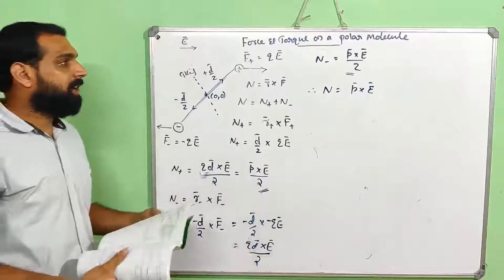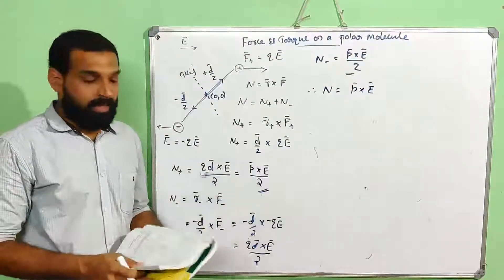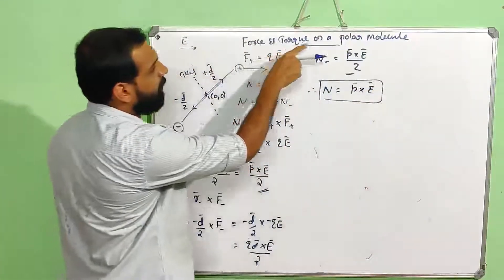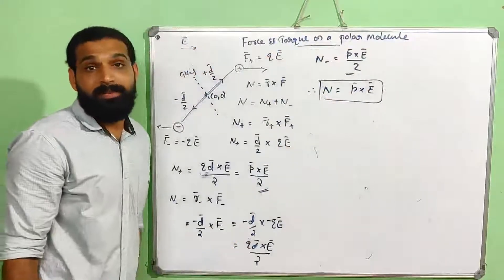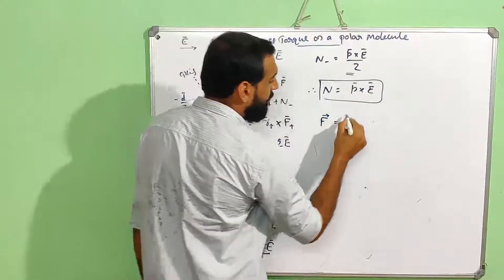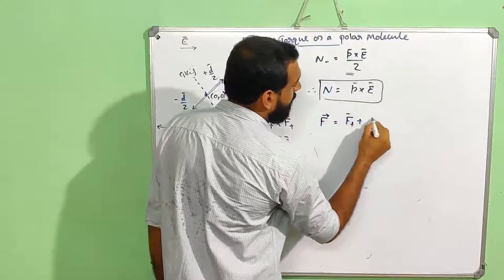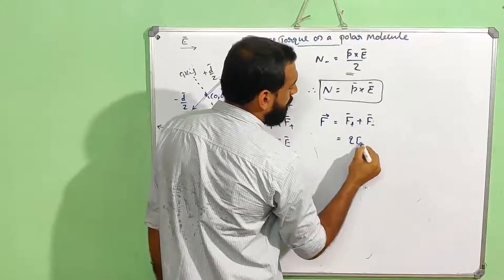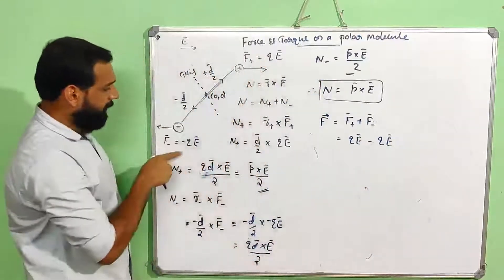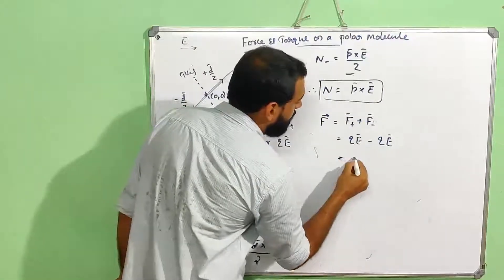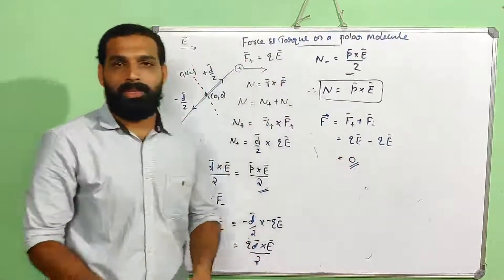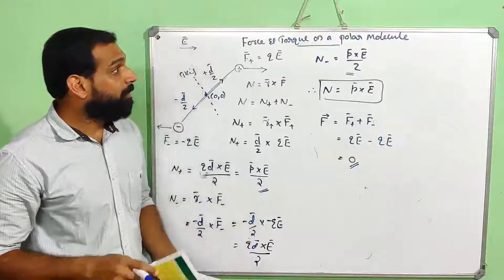Therefore, the net torque acting on the dipole is N plus plus N minus = p cross E / 2 + p cross E / 2 = p cross E. Now the total force: F plus plus F minus equals QE plus (minus QE), which equals zero. So the net force experienced by a polar molecule in a uniform electric field is zero.